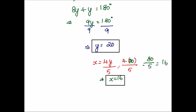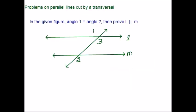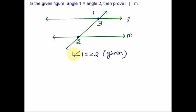We discussed finding the missing angle, stating and proving the reason for parallel lines, and finding the unknown variable. Now let us discuss an example where you have to prove two lines are parallel. In the given figure, angle 1 is equal to angle 2. Using this clue, prove that lines L and M are parallel. It is given that angle 1 equals angle 2.